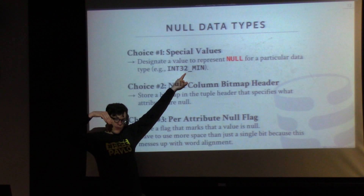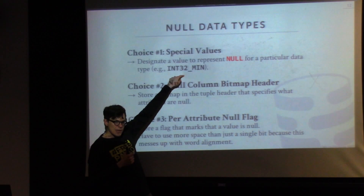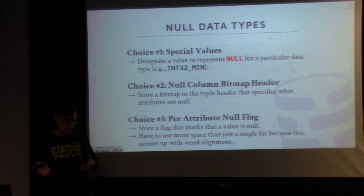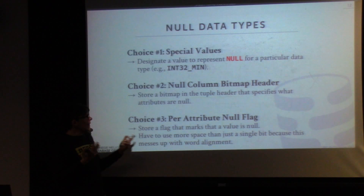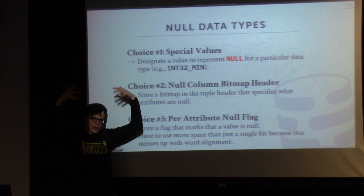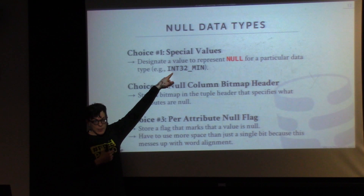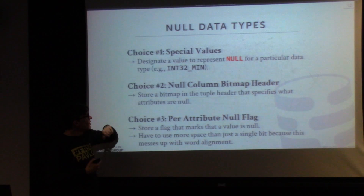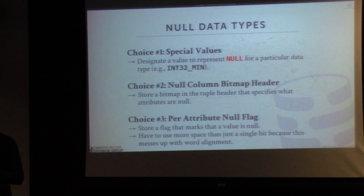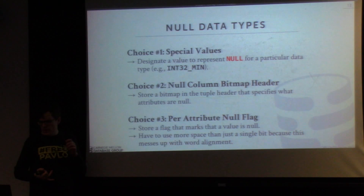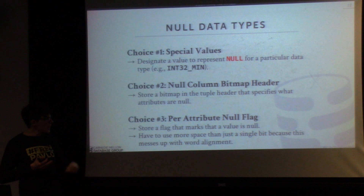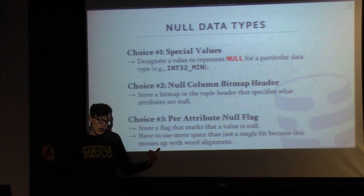What I like about this approach is it doesn't require any extra memory. You have to check in the upper levels to make sure people don't try to insert INT32_MIN — because otherwise we'd represent it as null when they thought they stored it. So you throw an out-of-bounds exception. The number of unique values for a 32-bit integer is reduced by one because we use a special value for null. The second approach, which is probably more common, is to maintain a bitmap in the tuple header that tracks which attributes in that tuple are null. This is used in Postgres, MySQL, SQL Server — pretty much everyone.